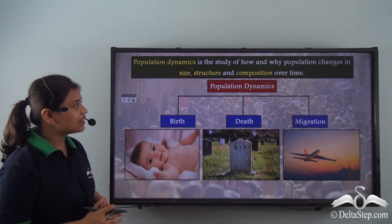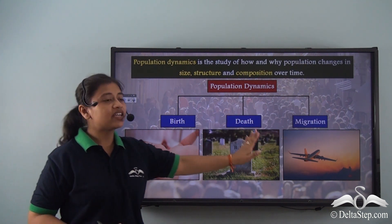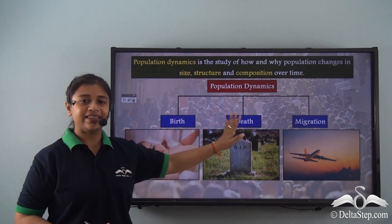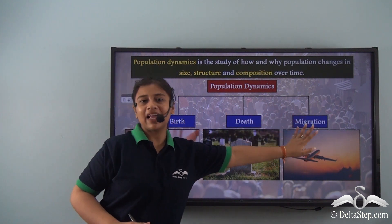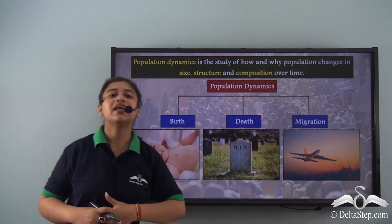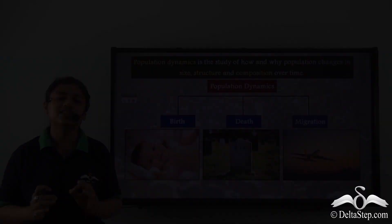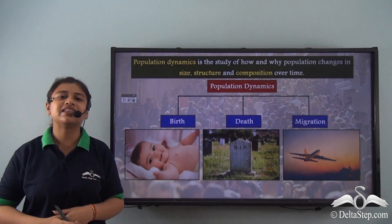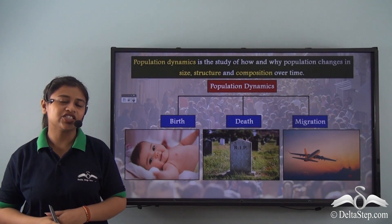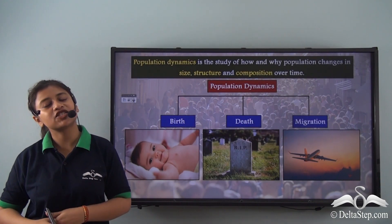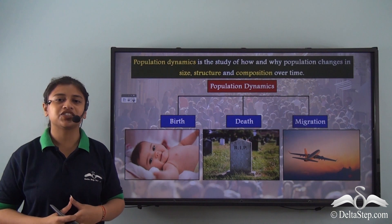So we can say that these three factors — birth, death, and migration — are important determinants that help in the change of size, structure, and composition of a population.